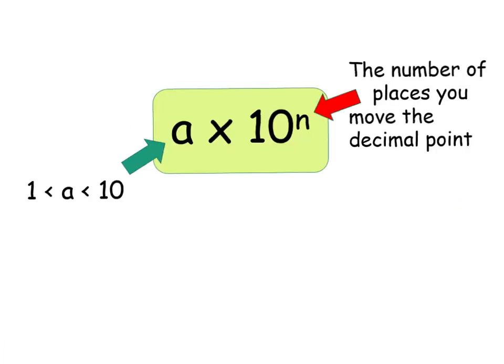Just to remind you of the general form of any number when it's written in standard form or scientific notation—remember, they mean the same thing—we should have a number that is between 1 and 10, multiplied by 10. And then the power is however many places you're moving the decimal point. So far, we were looking at how many places we were having to move the decimal point to the left.